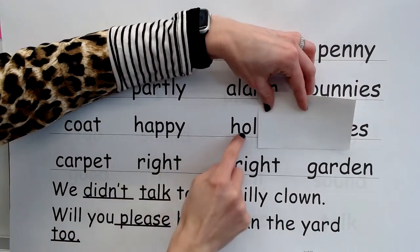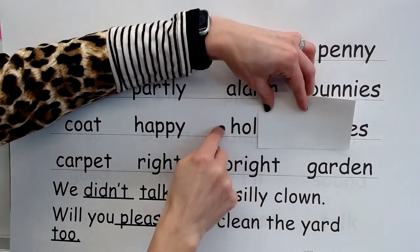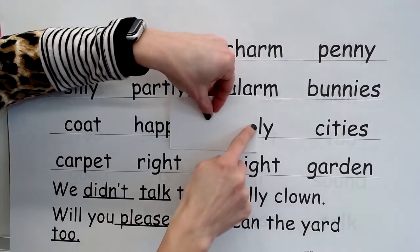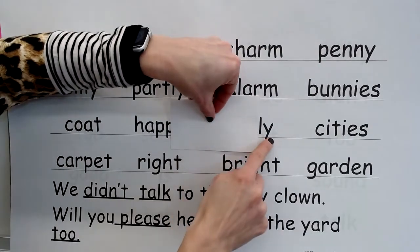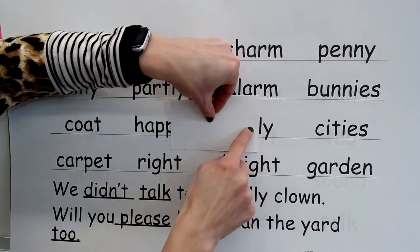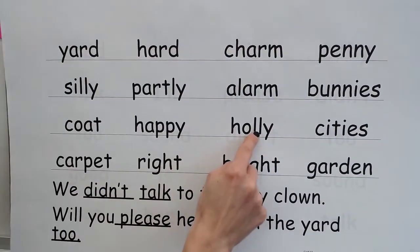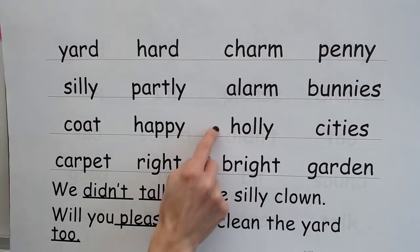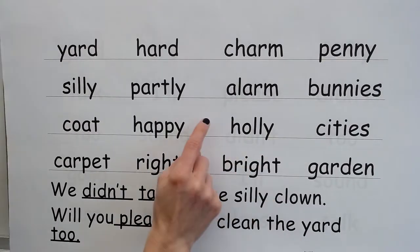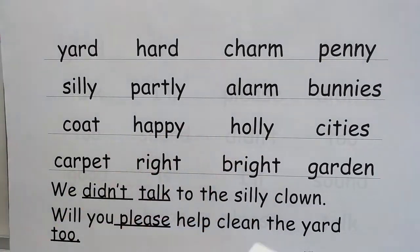Sound — A; syllable — all. Second syllable: sound — E, syllable — lee. Blend — holly; word — holly. Yes, holly.